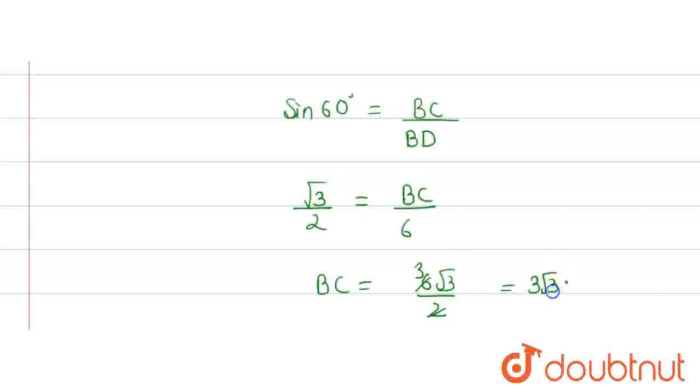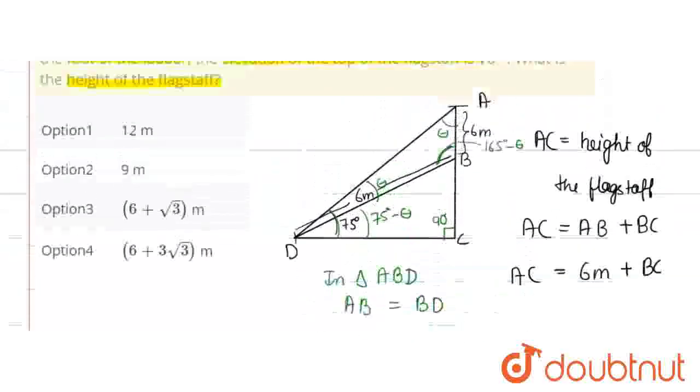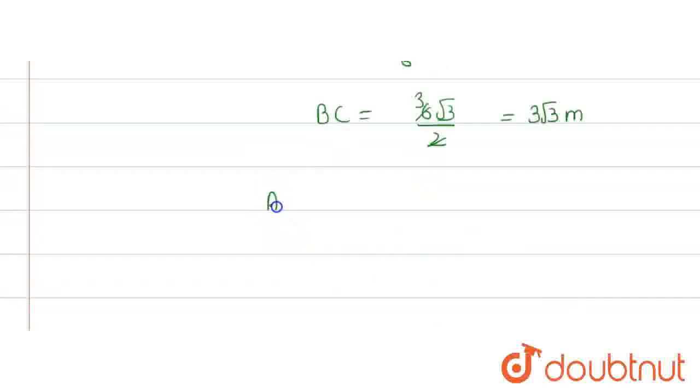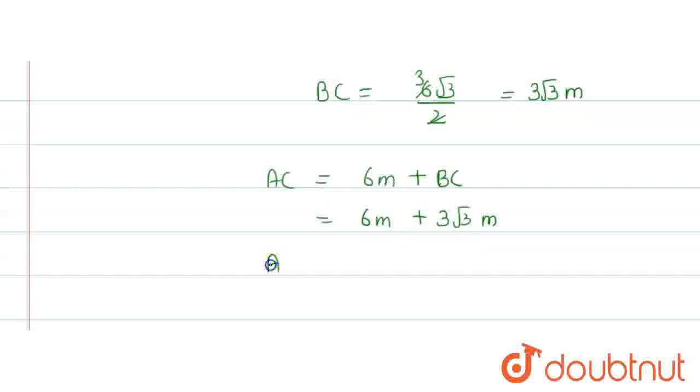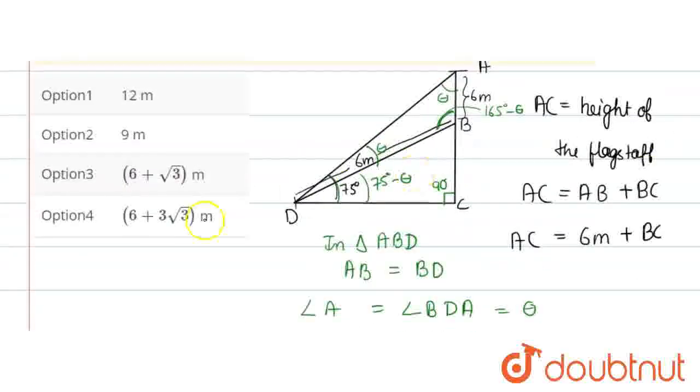We will find height of flagstaff, which is AC, equal to 6 meter plus BC. We will put 3 root 3 in place of BC. So AC value, which is the height of the flagstaff, comes out to be 6 plus 3 root 3 meter. So the correct option is option 4: 6 plus 3 root 3 meter. Thank you.